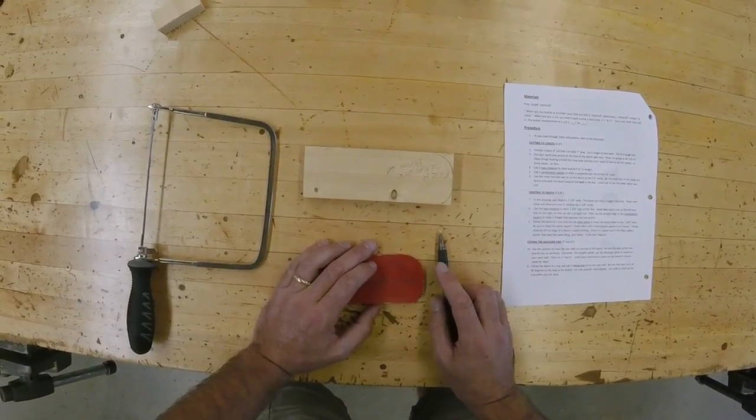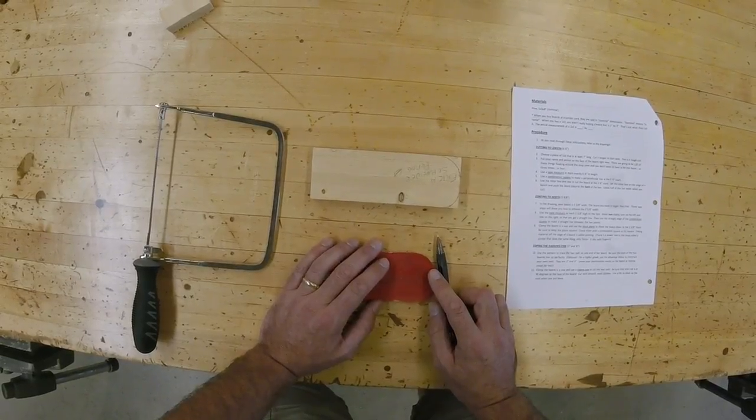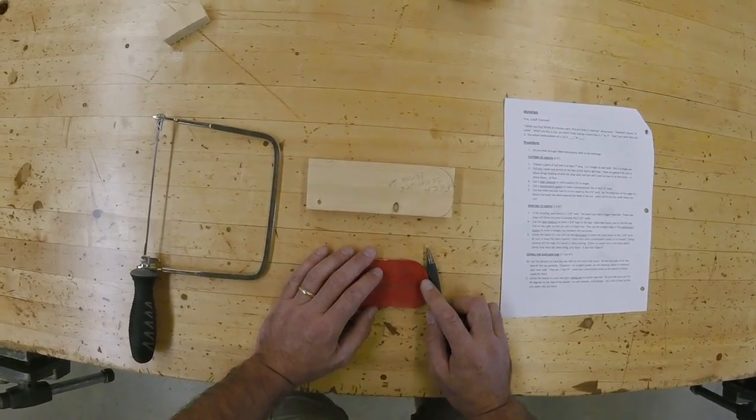Clamp the board on a vise and use a coping saw to cut the two radiae. Be sure your cut is 90 degrees to the face of the board. Cut with smooth, even strokes. Use a file to clean up the cuts when you are done.